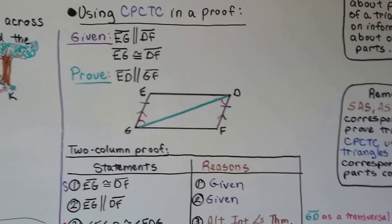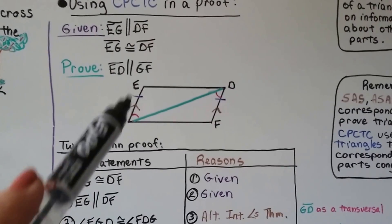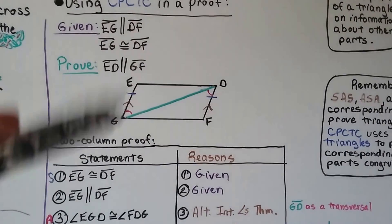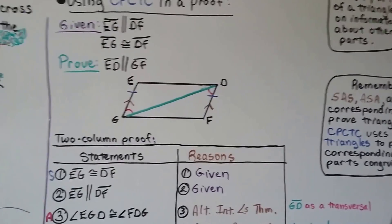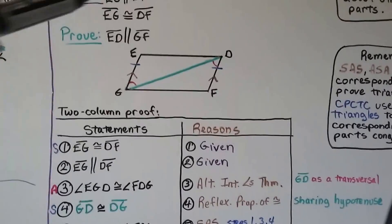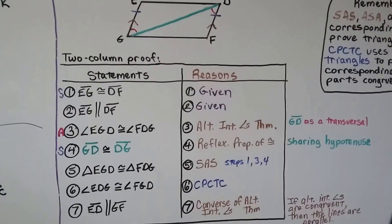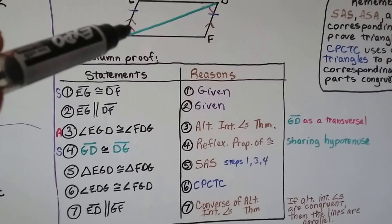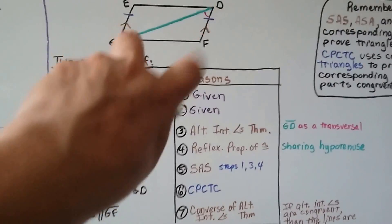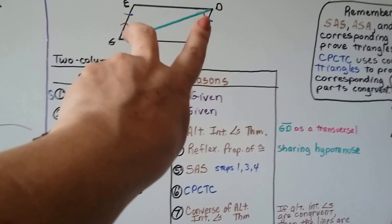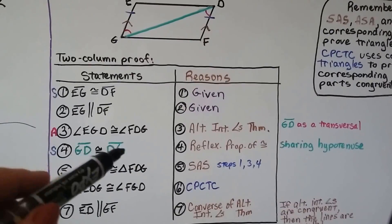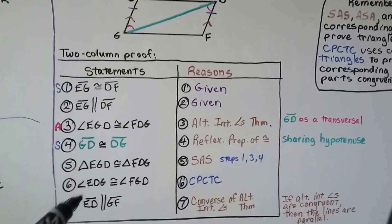Here's using CPCTC in a two-column proof. It's given that segment EG is parallel to segment DF, and segment EG is congruent to segment DF. We need to prove that segment ED is parallel to segment GF. Angle EGD is congruent to angle FDG by the alternate interior angles theorem, since EG is parallel to DF with GD as the transversal. Segment GD is congruent to segment DG by the reflexive property of congruence.